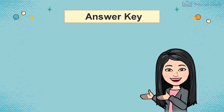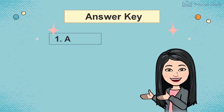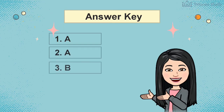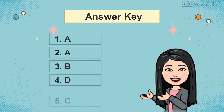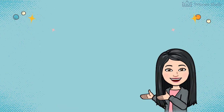Here are the answers: Number 1 is A, Number 2 is A, Number 3 is B, Number 4 is D, Number 5 is C.